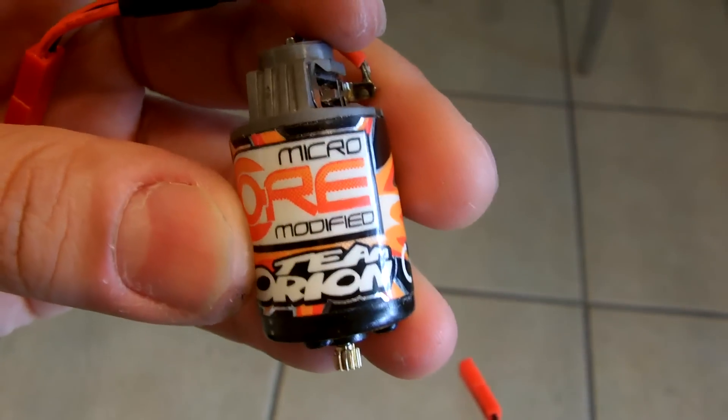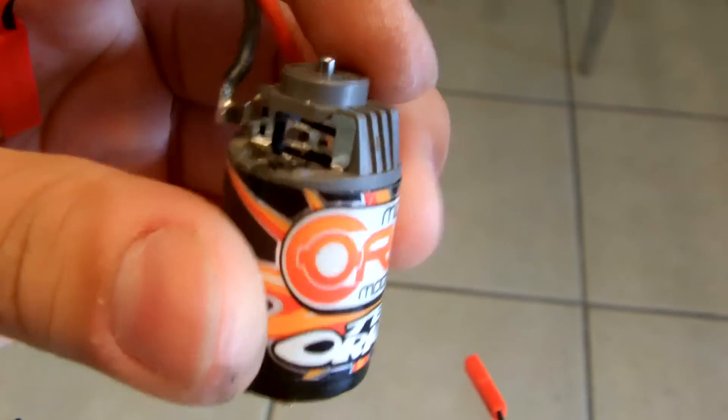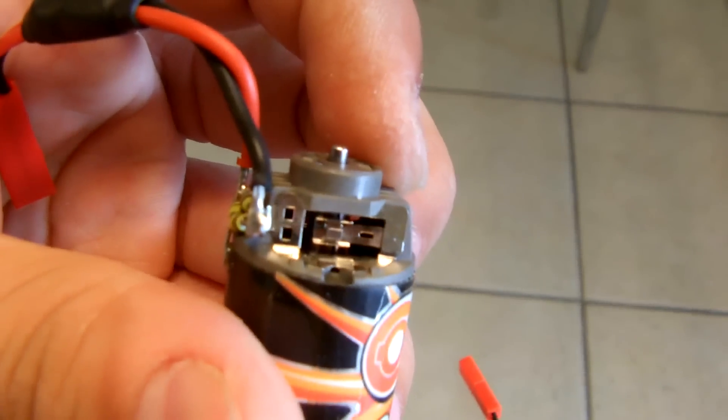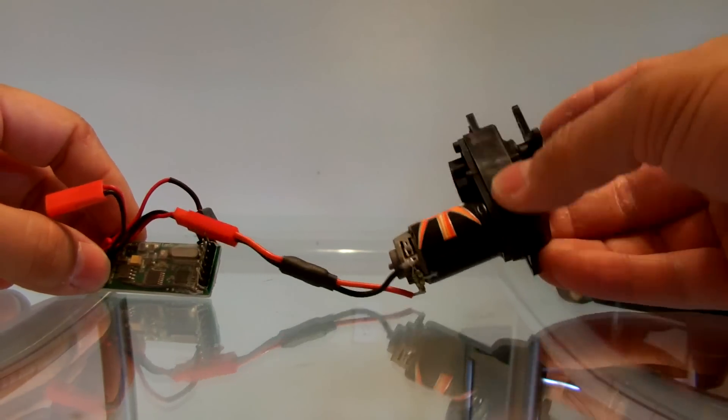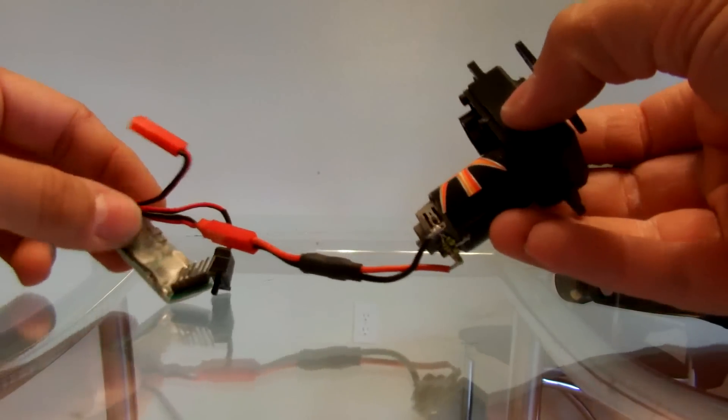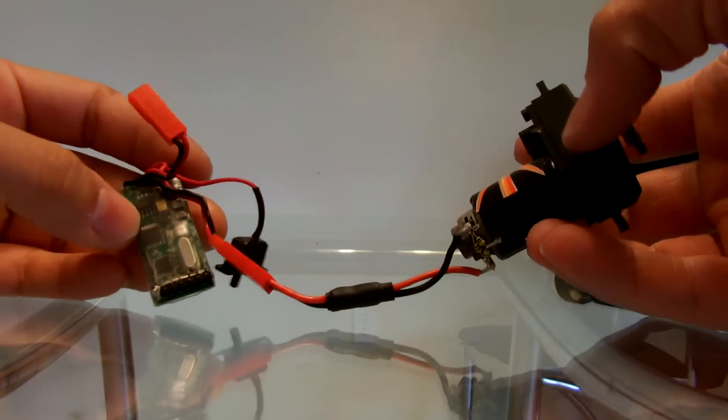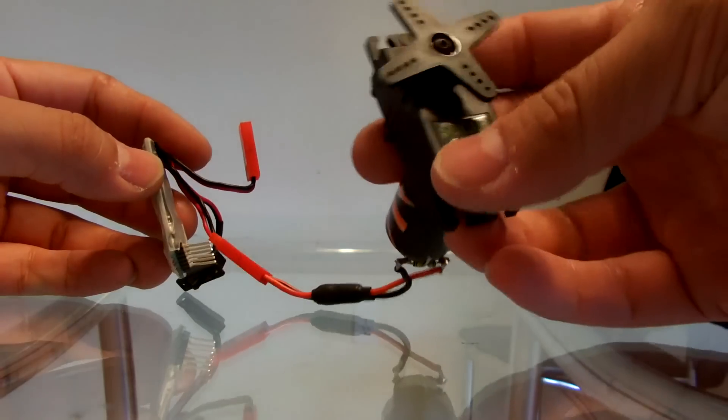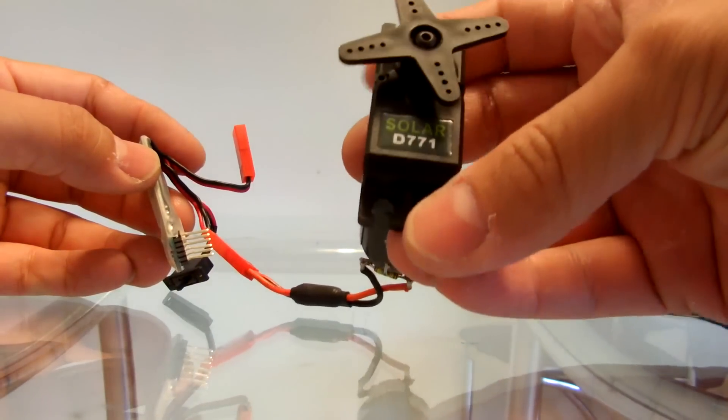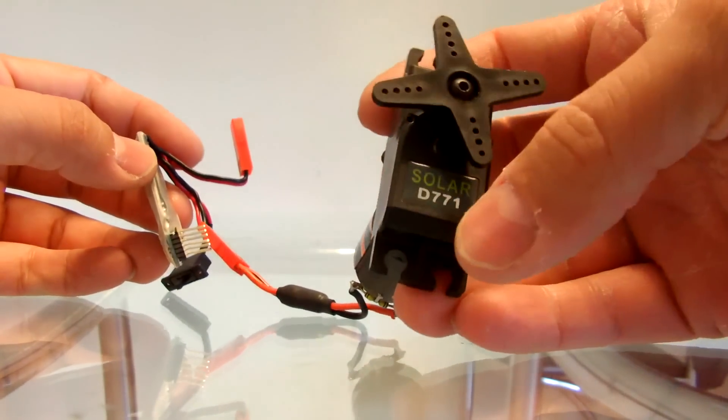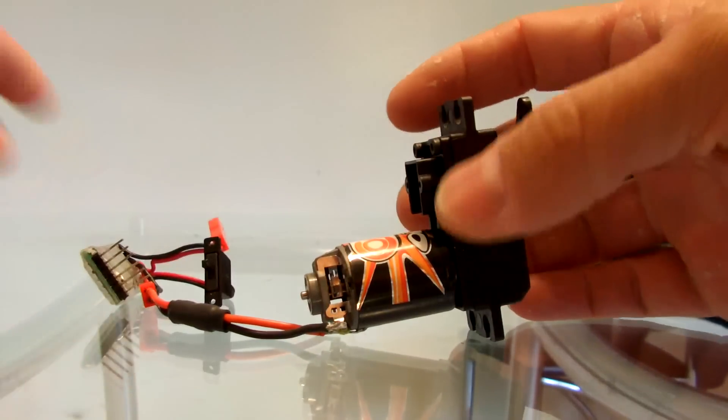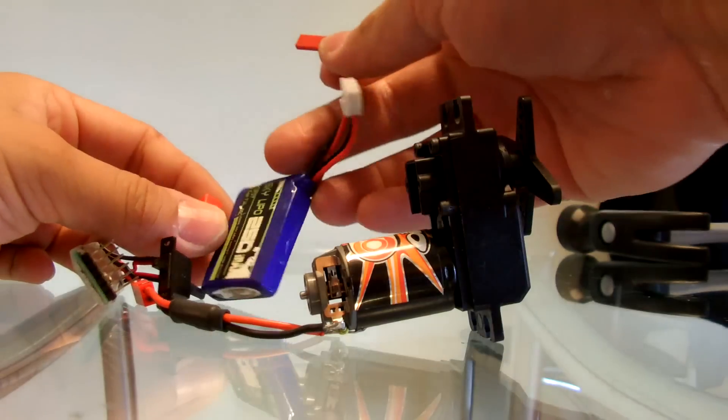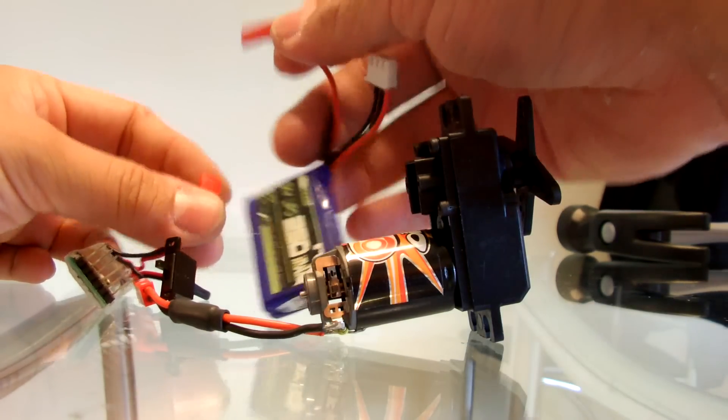Alright guys, here I have the servo already set up connected to my ESC from my Sumo crawler. Like I said, I went ahead and put this tip on it so you can see the actual rotational speed. I've attached the motor to it and I'm going to go ahead and put the battery in, using the 250 milliamp Skylipo.